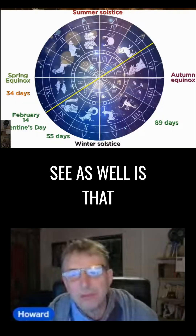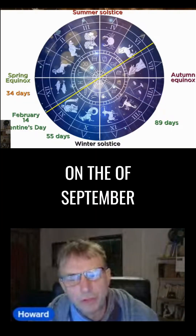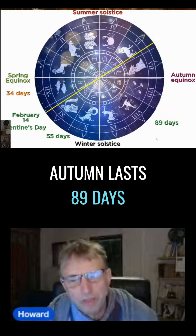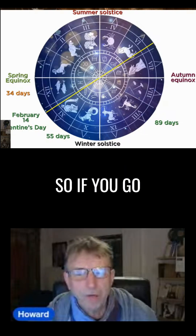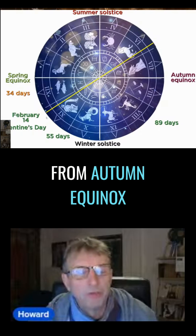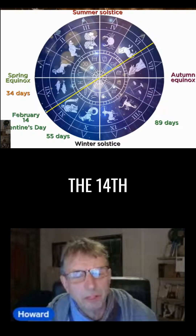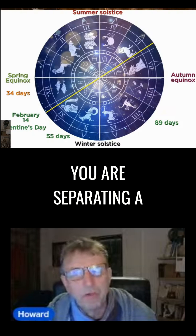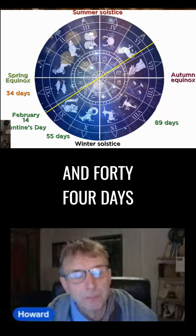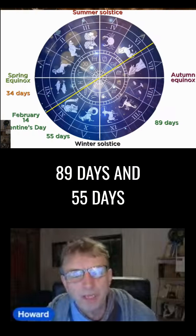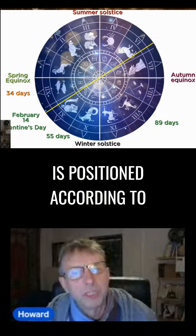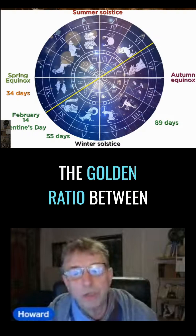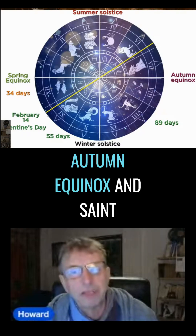What we can see as well is that if the autumn equinox is on the 23rd of September, autumn lasts 89 days — and 89 is a number in the Fibonacci series. So if you go from the autumn equinox to Valentine's Day on February the 14th, you are separating a period of 144 days into two periods of 89 days and 55 days. So the winter solstice is positioned according to the golden ratio between the autumn equinox and St. Valentine's Day.